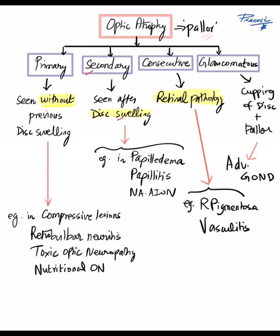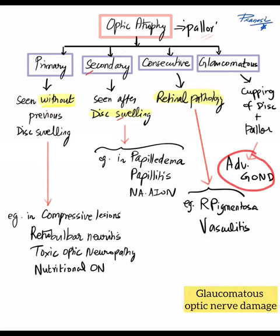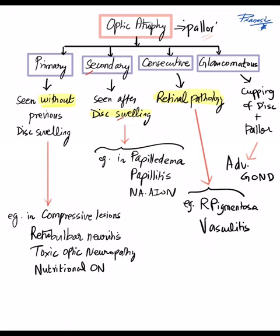The final type is glaucomatous optic atrophy, which is commonly seen in advanced glaucomatous optic nerve damage, where you will have typical glaucomatous cupping along with pallor of the neuro-retinal rim.